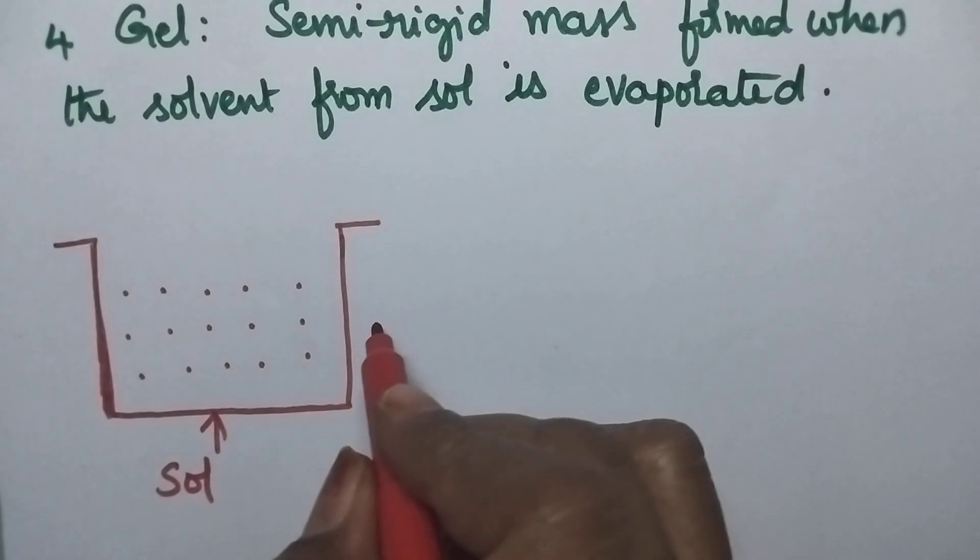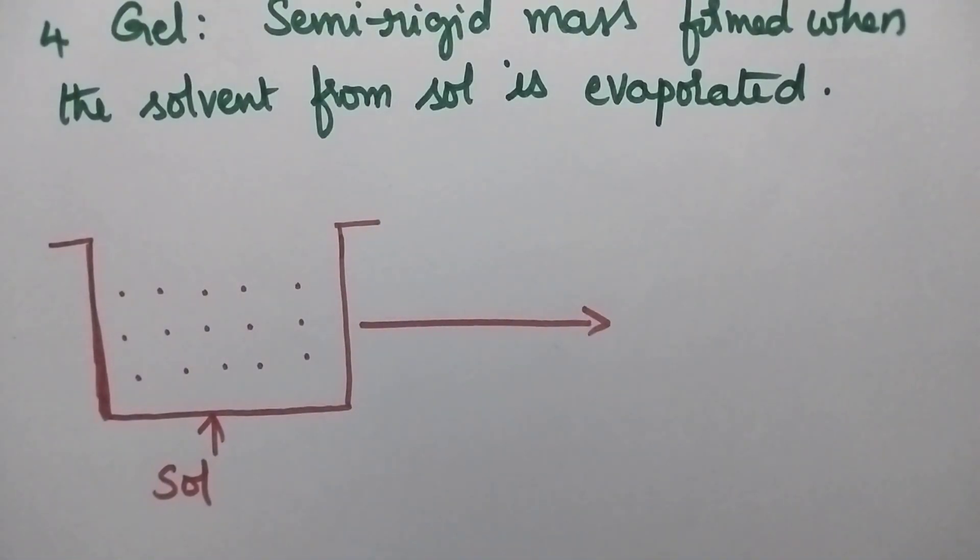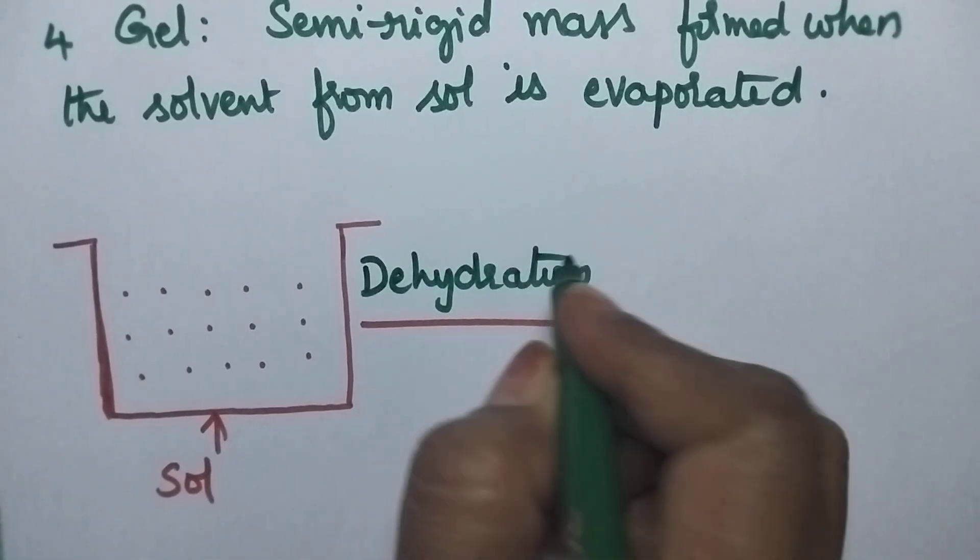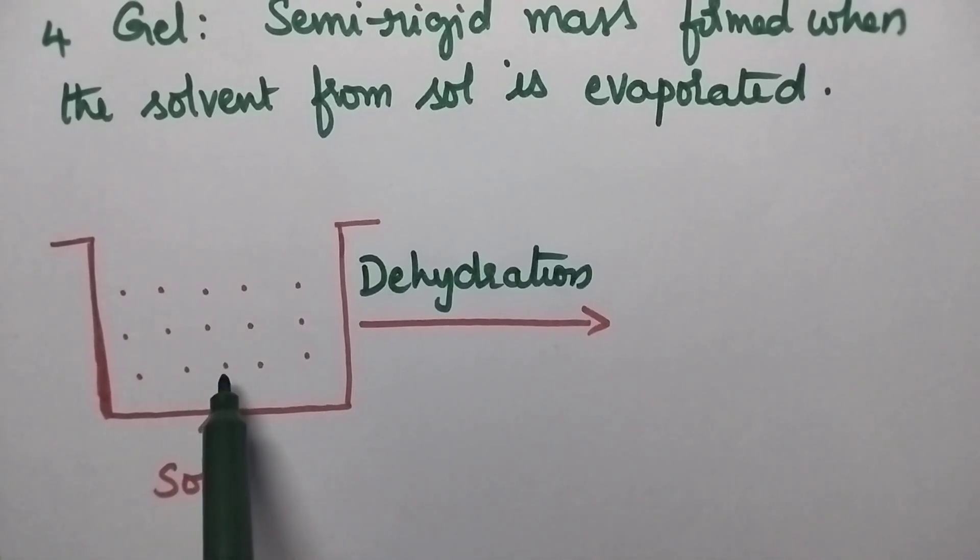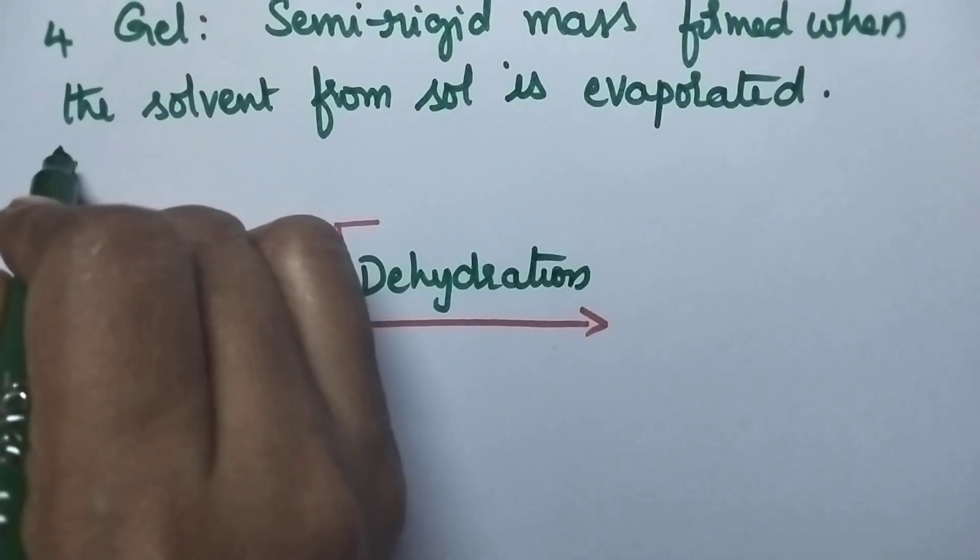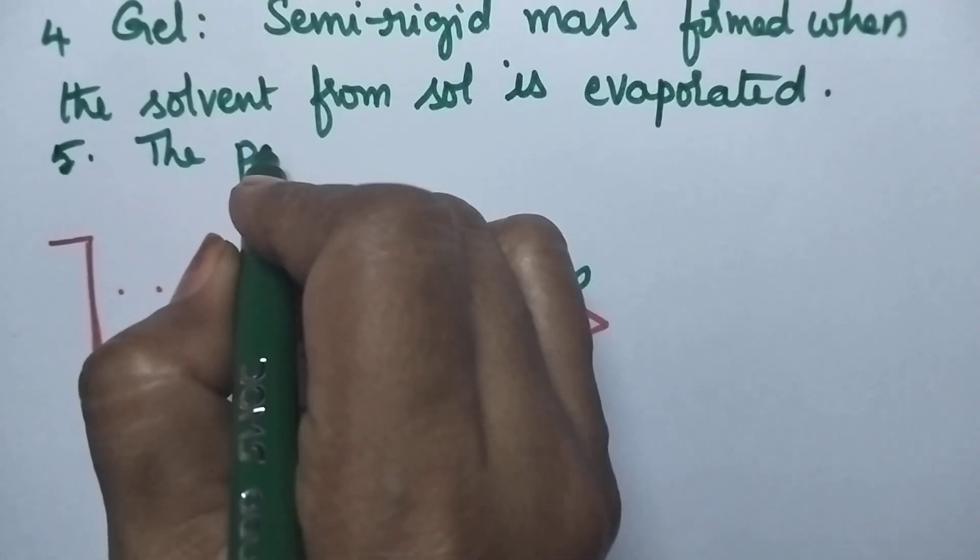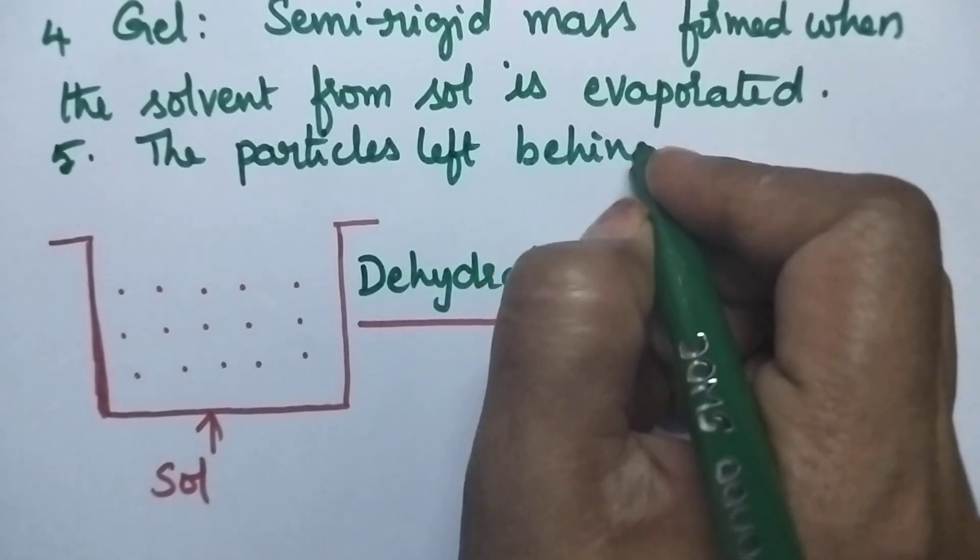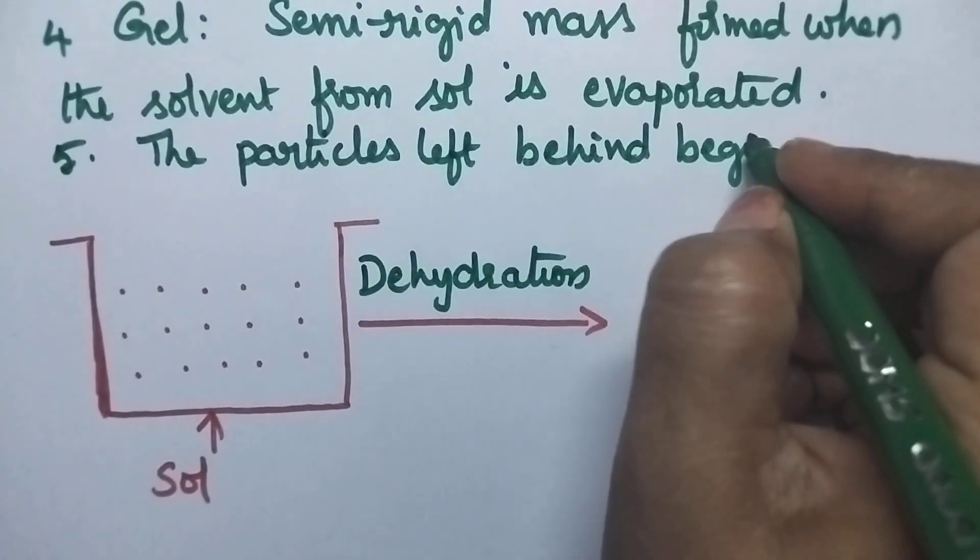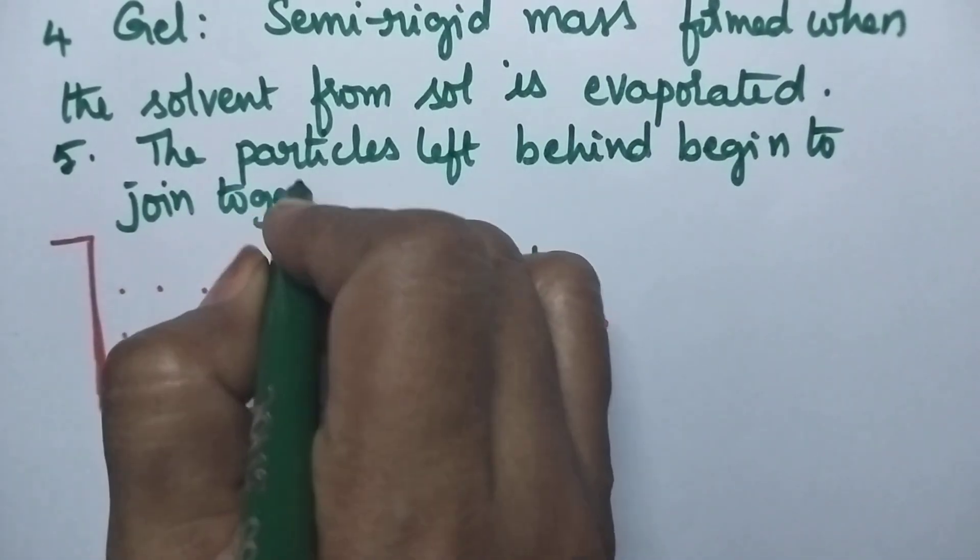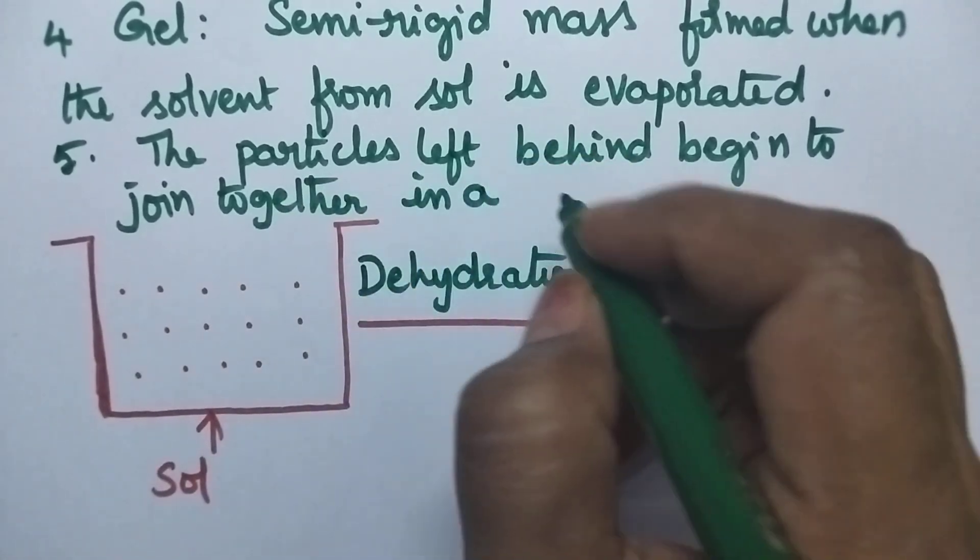Whenever the solvent is evaporated, that means by the process of dehydration, the particles present in the colloidal solution will form a continuous network structure. So during dehydration process, the particles left behind the colloidal solution will begin to join together in a continuous network.